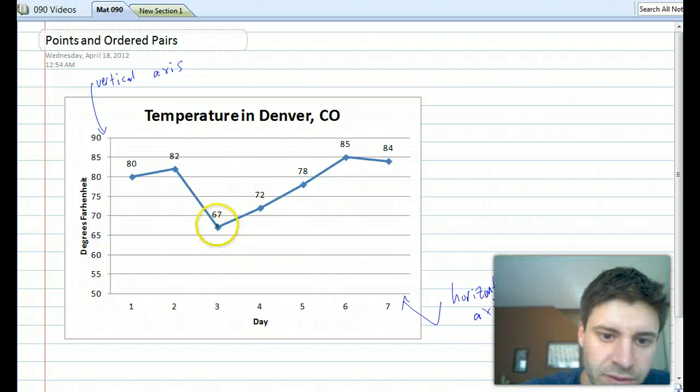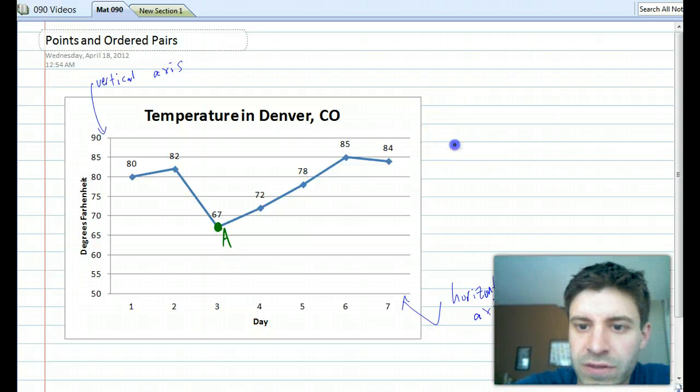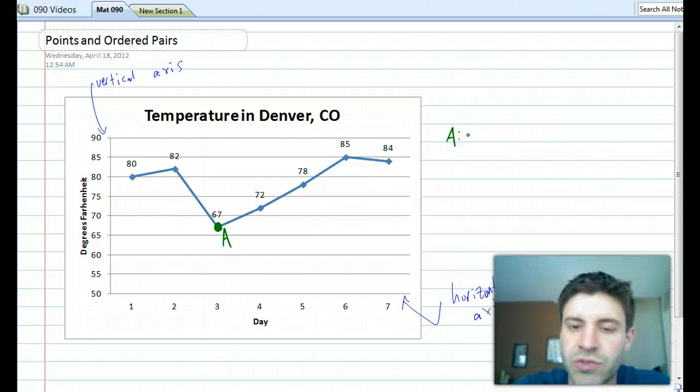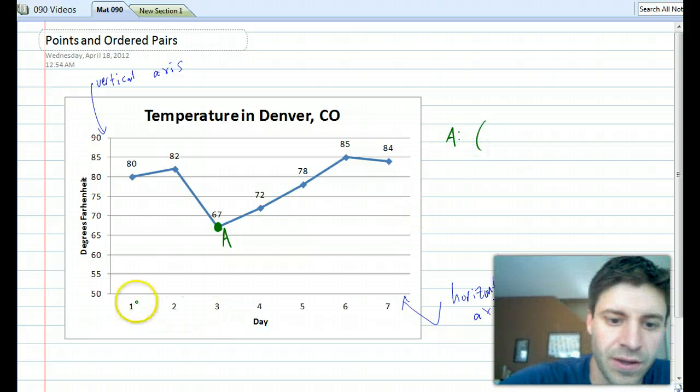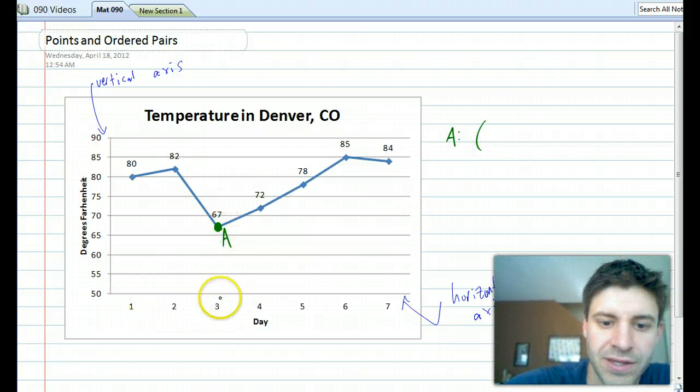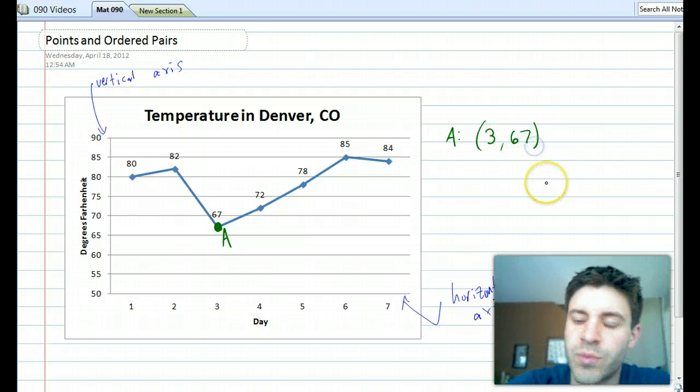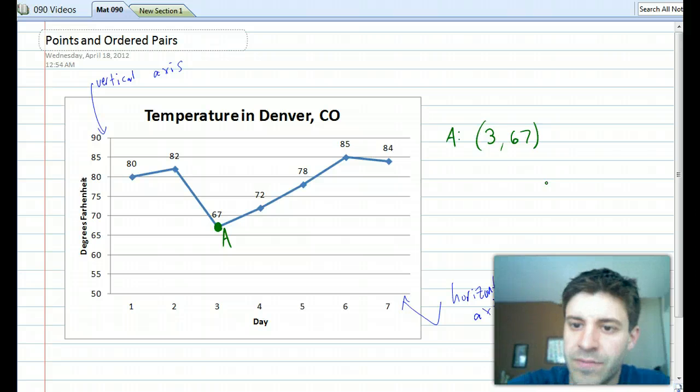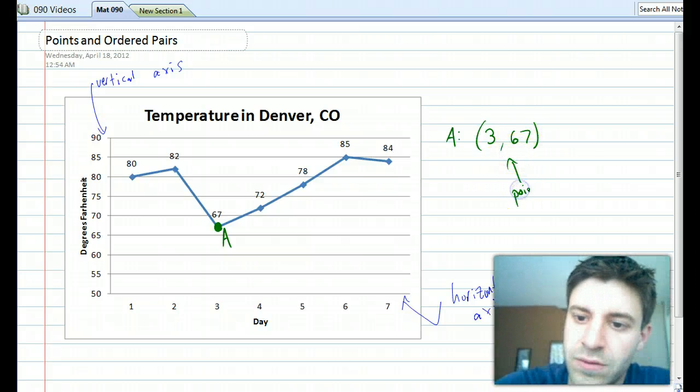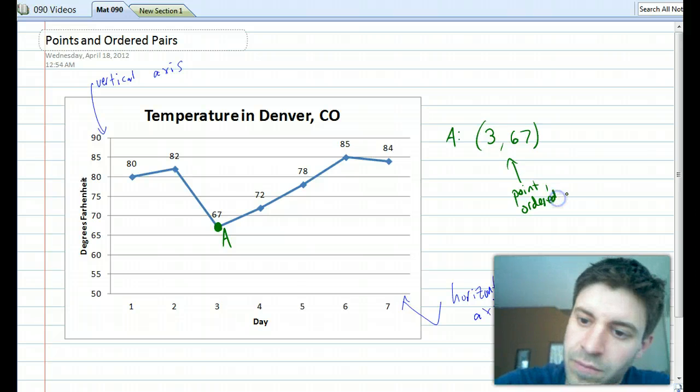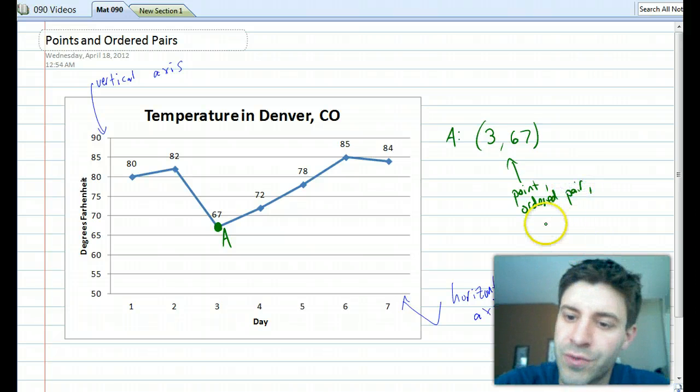Now let's take a look at one of these points. Let's take a look at that one right there. Let's label it A. If we go off to the side, the question is how do we describe A in a mathematical sense? The way that we do it is we write the value of the point along the horizontal axis, that would be a three, and the value of the point along the vertical axis, which is labeled up here as 67. We put those two numbers in parentheses separated by a comma, and we call this thing a point. We can also call it an ordered pair, and another name for it would be a coordinate.